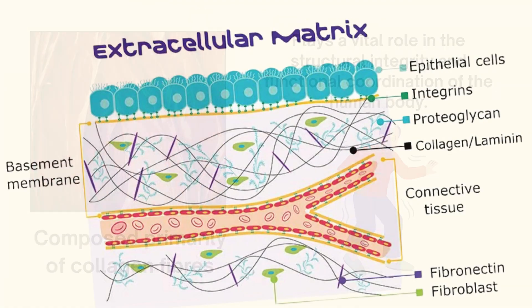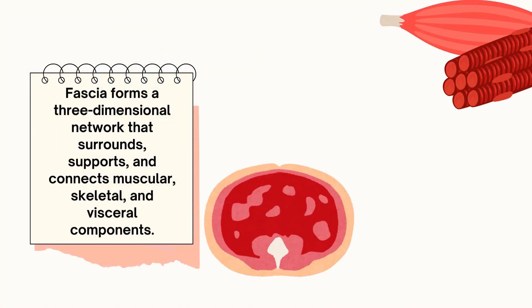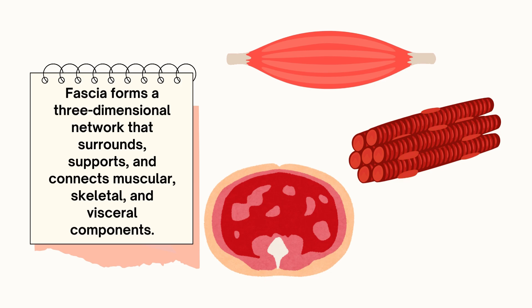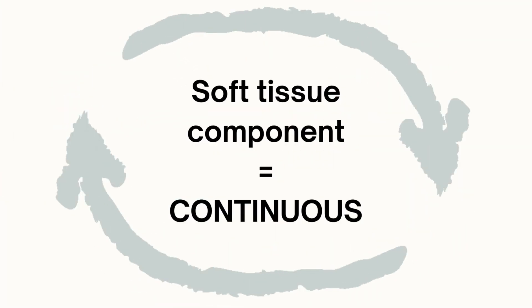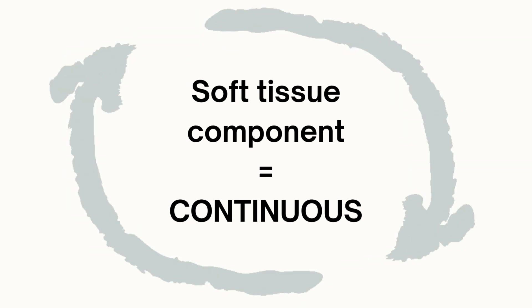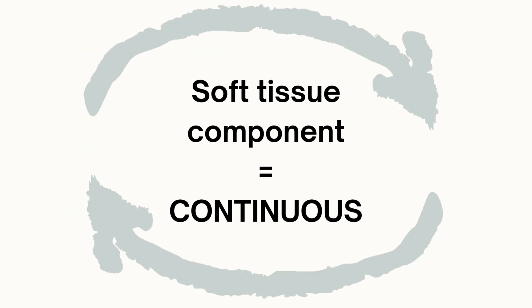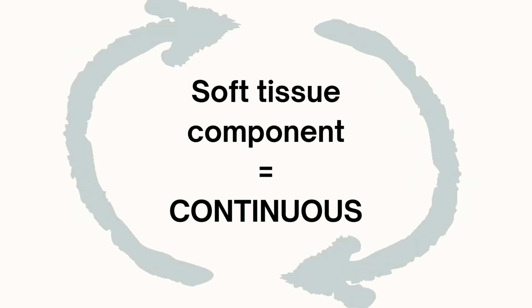So by general definition, if you haven't heard about it before, fascia encompasses the extracellular matrix, ECM, and cells, and it forms a three-dimensional network that surrounds, supports, and connects muscular, skeletal, and visceral components. This soft tissue component of the connective tissue system forms a continuous whole-body matrix known as the fascial system, and it permeates throughout the entire body.